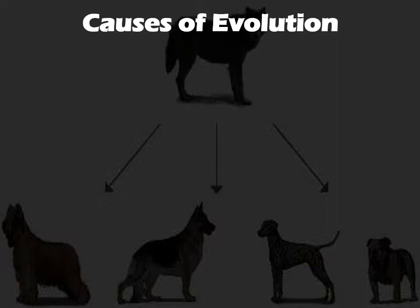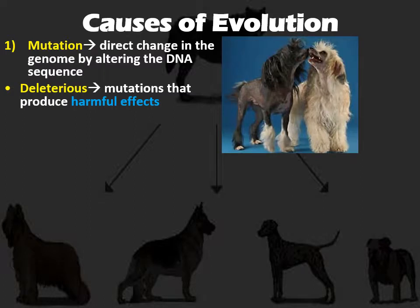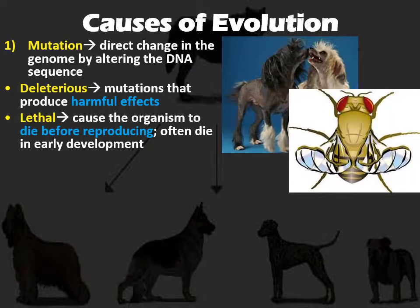Mutation is a change in the sequence of the DNA. Normally this can result in deleterious mutations that could be harmful to the species — maybe decreasing its chance of survival. For example, a species that loses its fur: having fur is important for body warmth, so not having fur might have an impact on survival rate. Lethal mutations could cause the organism to die before it reproduces or even die during development.